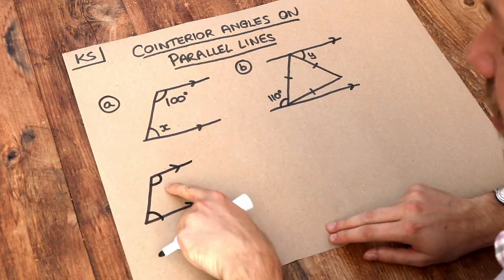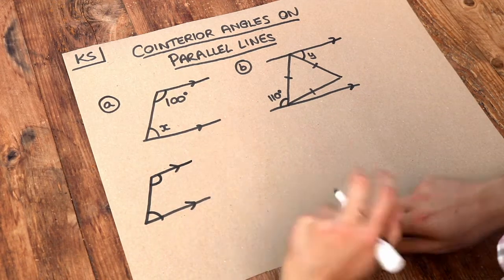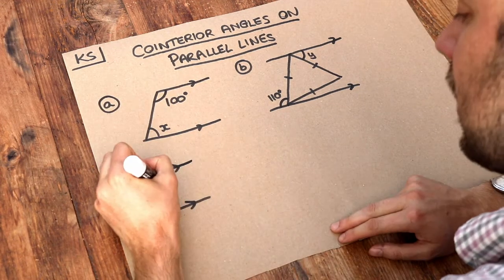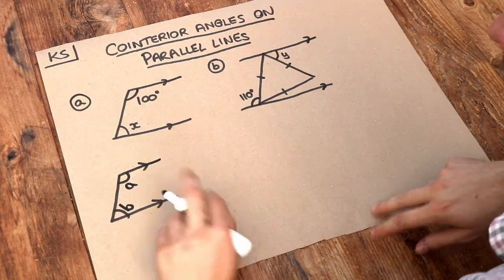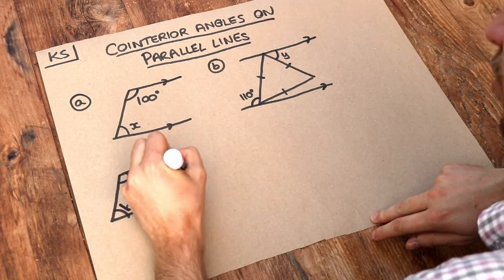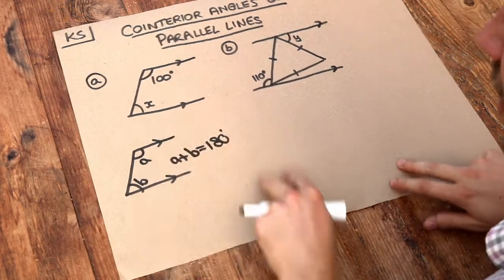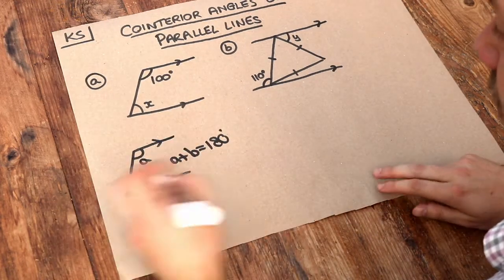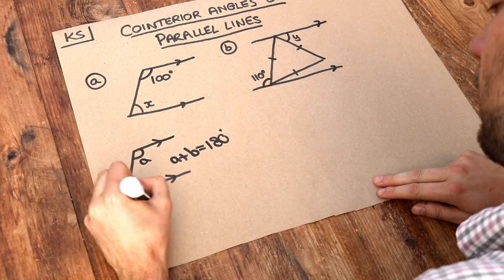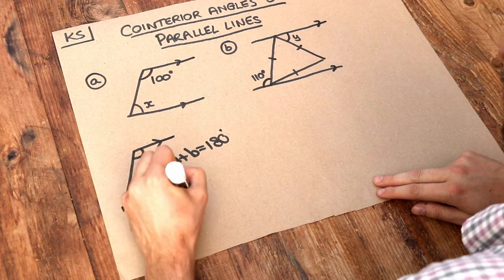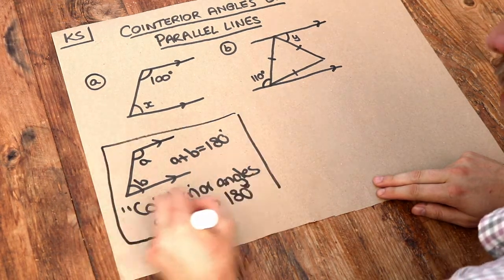With this C shape and parallel lines, these angles are not equal — you can see one is obtuse and one is acute — but they add to give 180 degrees. So if that's A and that's B, they add up to 180 degrees. In an exam, if asked for justification, we write: co-interior angles sum to 180 degrees.